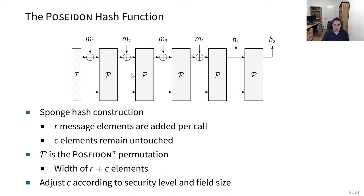We use basically a width of r plus c elements. This P here is the Poseidon permutation from before. We can adjust this, of course. For example, we can adjust c according to our security level and the field size we want to use. This is basically a classical sponge hash construction, but using our new permutation.